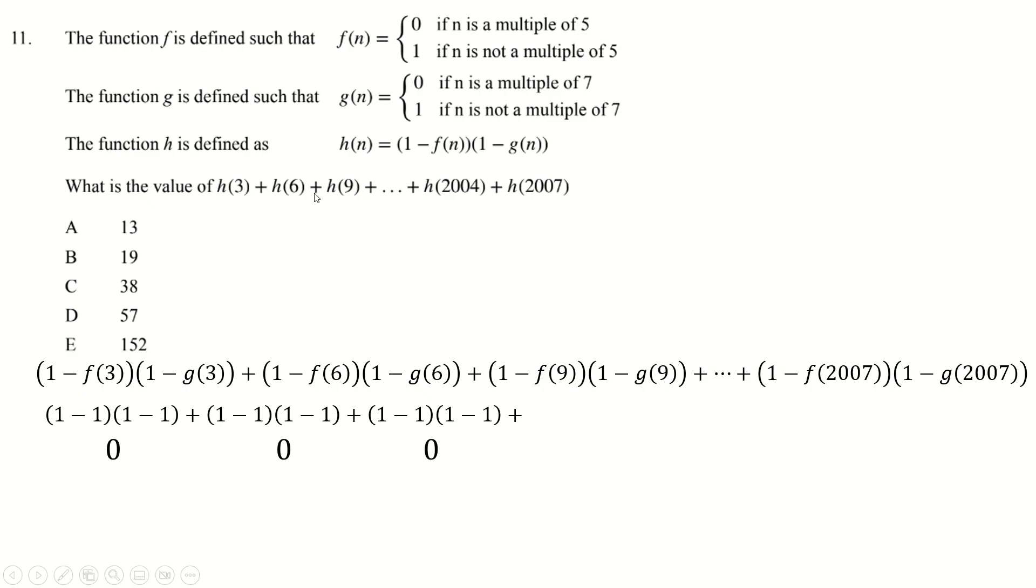They're all zeros until you get to a multiple of five or a multiple of seven. And the first multiple of five that's also, because of course we're only using multiples of three, is F of 15. So we get to that one. But then we realize, well, actually, just because F of 15 is now zero, because N is a multiple of five, that's going to be one minus zero, which is one. But then we're still timesing by zero because 15 isn't a multiple of seven.